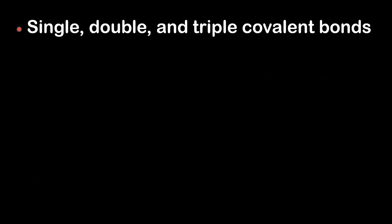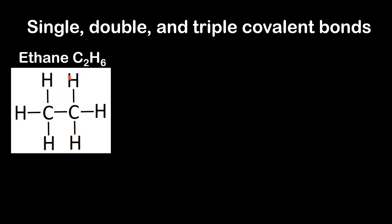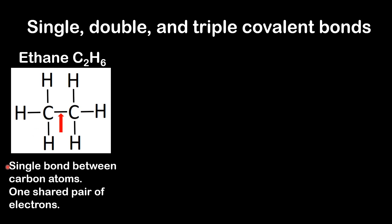Next we look at single, double, and triple covalent bonds. We have a compound called ethane and the molecular formula is C₂H₆, and this is the structural formula. The single line between the two carbon atoms represents a single bond. A single bond is composed of one shared pair of electrons.